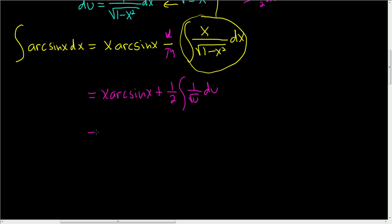This equals x arcsine x plus 1 half. We can write the square root of u as u to the 1 half and bring it upstairs so it becomes negative 1 half. Then we have du. So this is x arcsine x plus 1 half. Using the power rule, we add 1, so we get u to the 1 half divided by 1 half. Let's put the plus c there now.